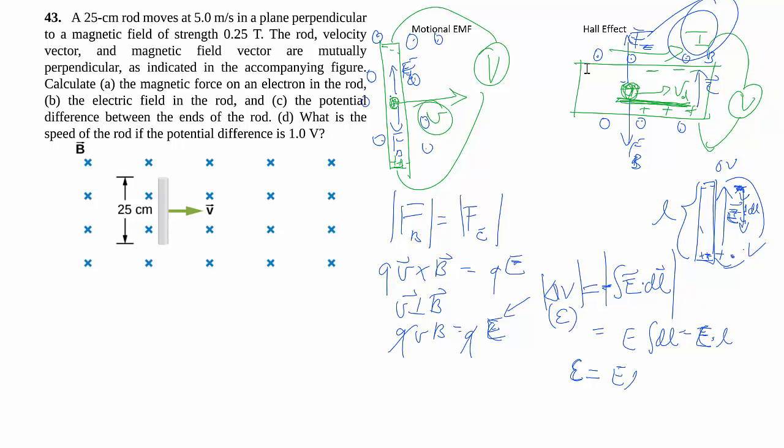This gives us that my EMF is E times ℓ. E being v times B gets us my Motional EMF formula: EMF = vBℓ. But really, the only thing you have to remember is the starting point. So that's the idea behind Motional EMF, and let's just finish the question.